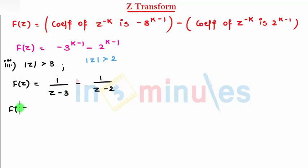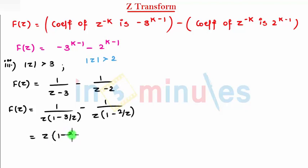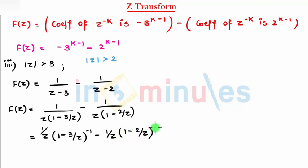Here, f(z) — I need to take z common. So I write: z times (1 minus 3 by z), minus z common times (1 minus 2 by z), times 1 by z. So here, we can write this as z times (1 minus 3 by z) raised to minus 1. This is f(z).